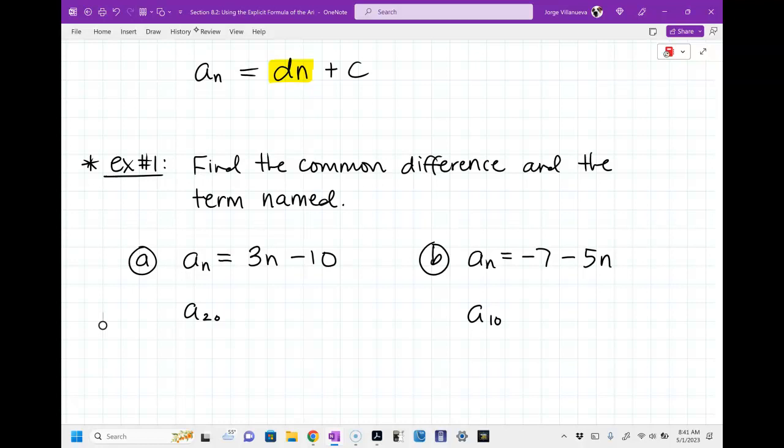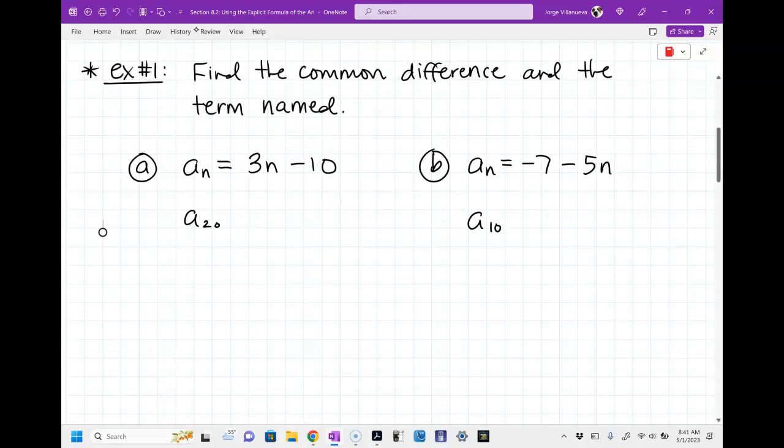So, to find the common difference for part a and b, it should be relatively easy. Just look for the number that's in front of the letter n that's right next to it, not added or subtracted, the thing that's multiplying. And then for the term named, we just got to plug in a number and that's all. So, these are pretty easy problems. They don't take very long. So, for part a, what is my common difference? What is my d value for part a? Remember, it's the number that's stuck to the letter n. Three, right?